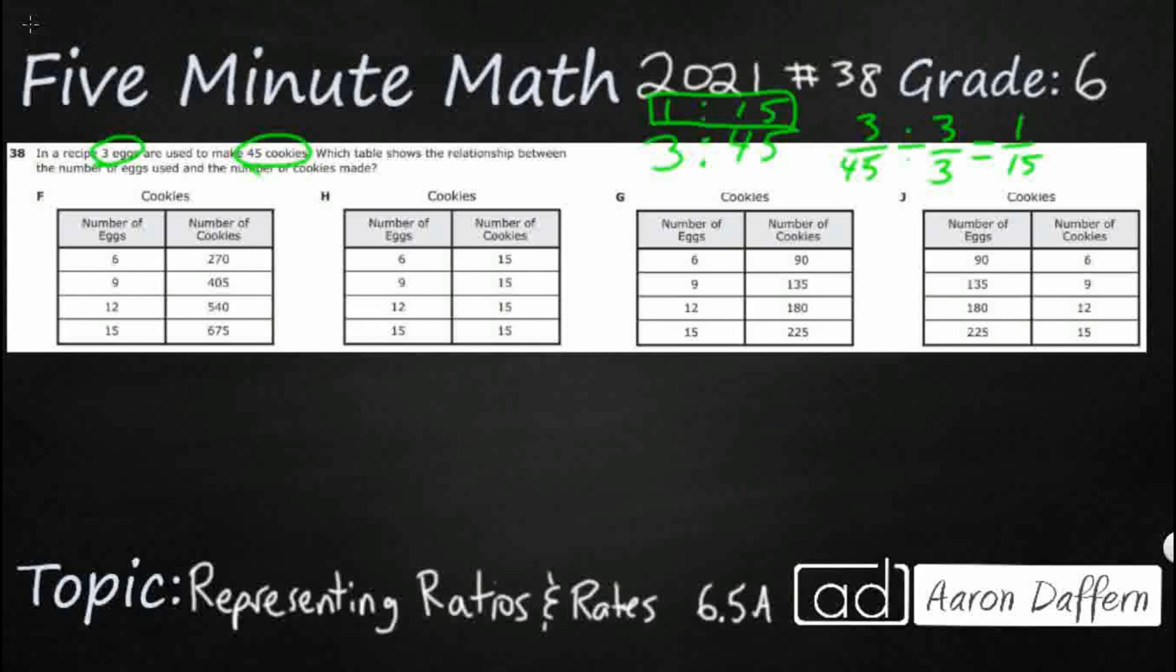Now can I find that in any of these? Let me just start with the simplest version here. I've got 6 to 270. Looks a bit big, but I'm not 100% sure. Let me see, 6 to 270. I'm going to turn this into a fraction.